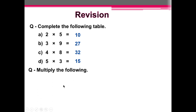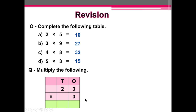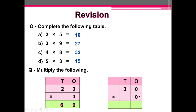Next question: multiply the following. We first multiply at the 1's place and then at the 10's place. So let's begin. 3 multiplied by 3 is equal to 9. 2 multiplied by 3 is equal to 6. So 23 multiplied by 3 is equal to 69. Next question: 30 multiplied by 3. Just as a reminder, whenever we multiply any digit with 0, our answer will be 0. So 30 multiplied by 0 is equal to 0.